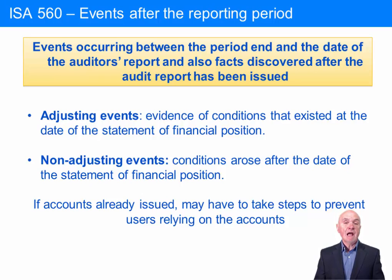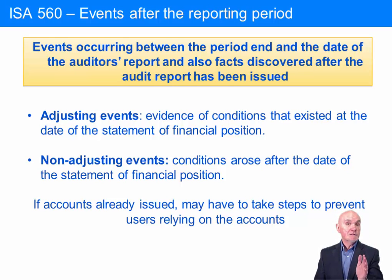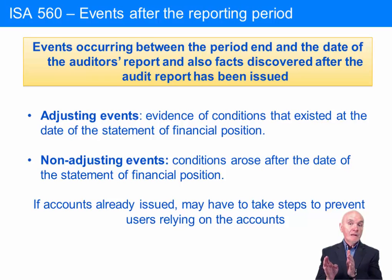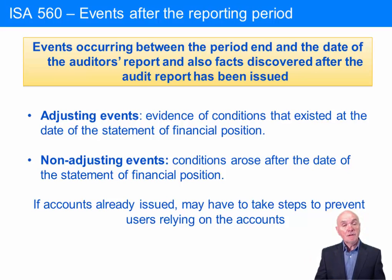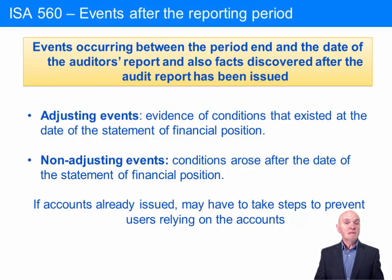Occasionally, these events happen so late that the financial statements may have already been signed and issued to the members. For example, we have an amount owing at the 31st of December, the audit report is signed on the 31st of January, and then in early February a large customer who owed money at the 31st of December goes into liquidation. That is telling us that at the 31st of December this debt was worthless. We've only found out about it after the accounts were signed, and this really means the financial statements are incorrect. They have been audited and signed, and they turn out to have been incorrect — it might not be the fault of the auditor, as there was perhaps no sign that this customer was going into liquidation, but nevertheless the auditor has signed and the company has issued financial statements which are incorrect.